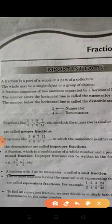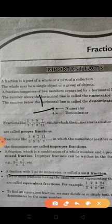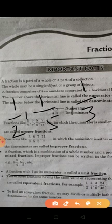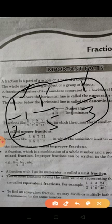A fraction with 1 as its numerator is called a unit fraction. For example, 1 upon 5, 1 upon 3, 1 upon 2 — these fractions are unit fractions. The fractions whose numerator is 1 and denominator can be anything are called unit fractions.